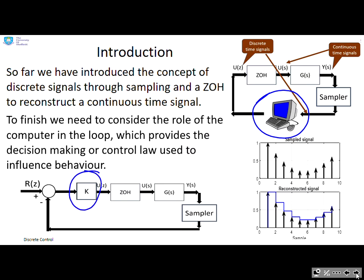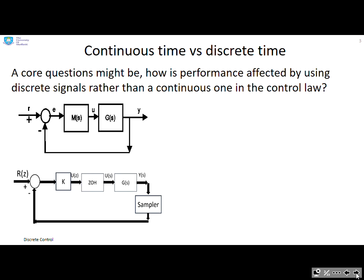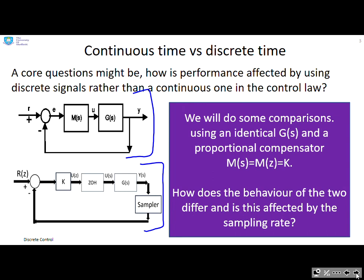Here I've marked it as K in this block diagram which is used to influence behavior. A core question might be: how is performance affected by using discrete signals rather than a continuous one? So I've got my continuous law up here and my discrete implementation down here. We're going to do some comparisons using an identical G(s) in both loops, and we're also going to make the compensator identical—just a constant K—and ask how does the behavior of the two loops differ and how is this affected by the sampling rate?